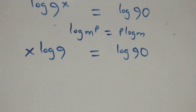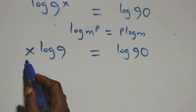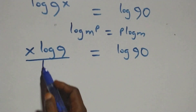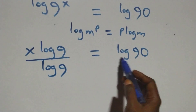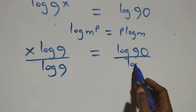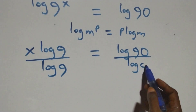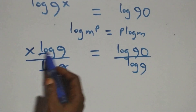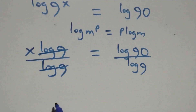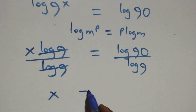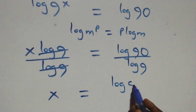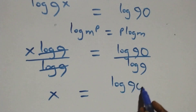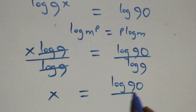The next step here: divide both sides by log 9. We divide this side by log 9 and also divide this side by log 9, which implies that log 9 cancels each other. And we have x equals to log 90 over log 9.